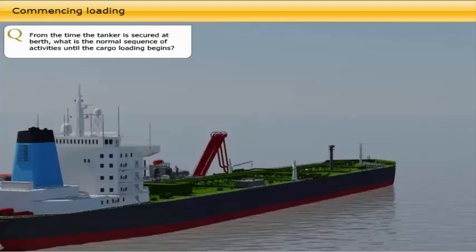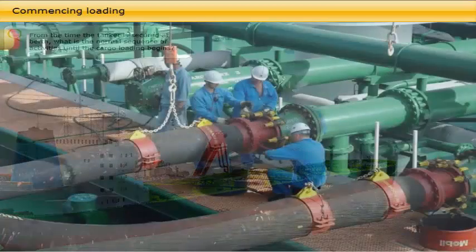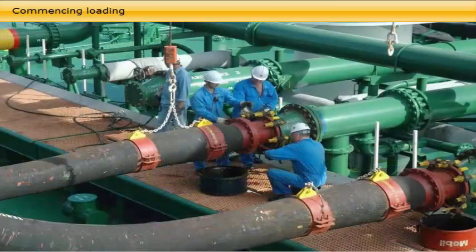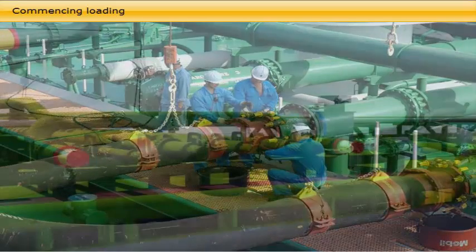From the time the tanker is secured at berth, the normal sequence of activities until cargo loading begins is as follows: formalities with port authorities and the terminal or loading master are completed, cargo hoses and arms are connected, and unused manifold connections are blanked.